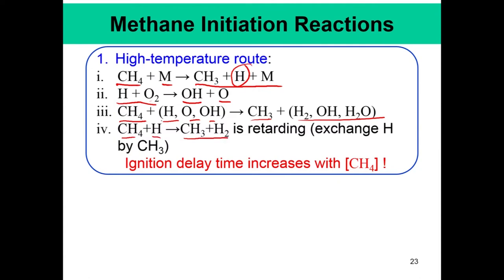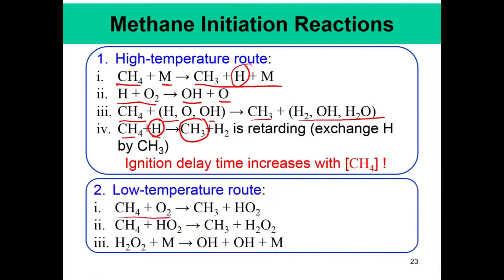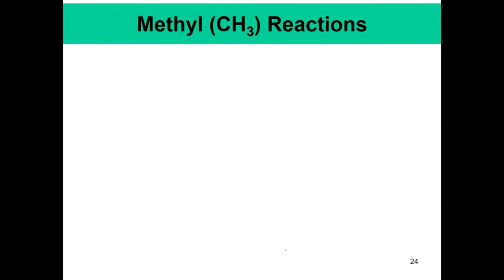If we consider the reaction CH4 plus H becoming CH3 plus H2, this very energetic hydrogen radical leads to the formation of a less energetic methyl radical CH3. This is why methane ignition delay correlations show a positive exponent — the more methane present, the larger the ignition delay, because the energetic H radical reacts with methane to form the less energetic CH3. The low-temperature route is: CH4 plus O2 forms CH3 plus HO2; CH4 plus HO2 forms CH3 plus H2O2; and H2O2 plus M forms OH plus OH plus M — the chain branching step.